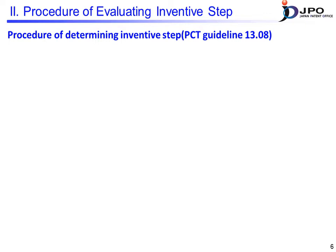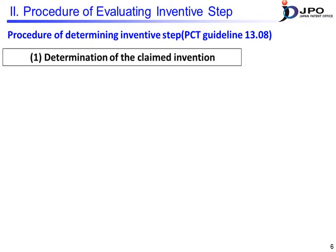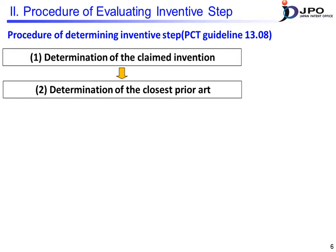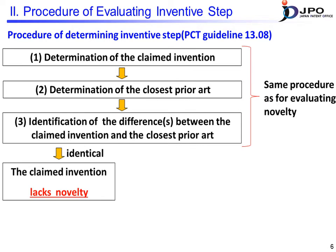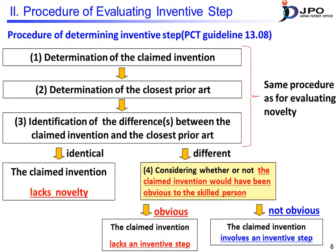I will now explain the actual procedures for determining the existence of an inventive step. First, the scope of the claimed invention is determined. Next, the primary prior art, which is the closest to the claimed invention, is selected through prior art search. Then, the claimed invention is compared to the primary prior art. If there are no differences between them, the examiner determines that the claimed invention lacks novelty. If there are one or more differences, the claimed invention is novel. For the next step, the examiner will determine whether the claimed invention has an inventive step in consideration of the primary prior art and secondary prior art.